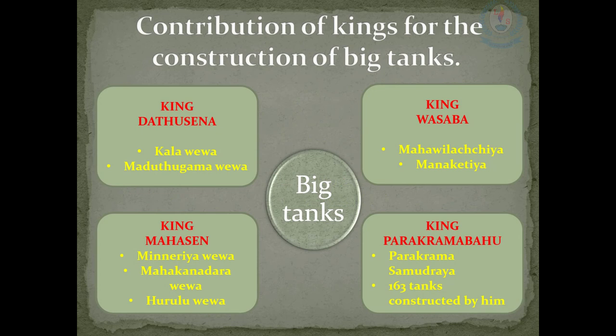Let's see some kings who constructed big tanks. King Dhatusena built Kala Wewa and Maduru Oya. King Vasabha built Mahawilachi and Manakati tanks. King Mahasen built Minneriya, Mahakandarawa, and Hurulu Wewa. King Parakramabahu built Parakrama Samudraya and also built 163 tanks.